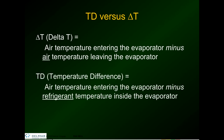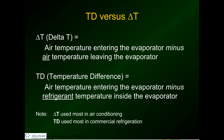In refrigeration, we use something called temperature difference, or TD. That is the air temperature entering the evaporator, and you find the difference between that and the refrigerant temperature inside of the evaporator. It's a little more difficult, not quite as easy as getting a Delta T. In this class and the rest of these classes, we're going to be talking about TD, which is used in commercial refrigeration — not Delta T. So don't get confused when you hear and see TD.